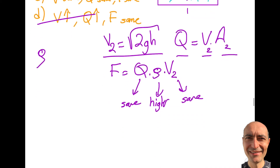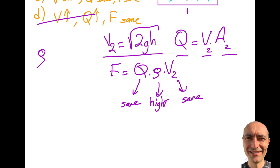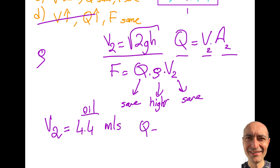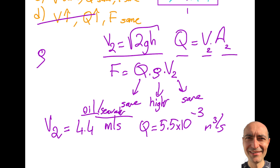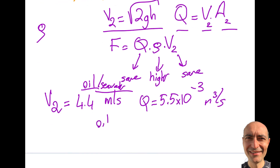I actually went ahead and calculated for you, so I would like you to practice this. In this case I'm going to get V2 to be 4.4 meters per second, Q to be 5.5 times 10 to the minus 3 cubic meters per second — and this is the same between the oil and seawater. So these two will be the same for V2 and Q. But the force that I obtain is only calculated using oil, and I get myself 19.5 Newtons. Thank you for watching this video.